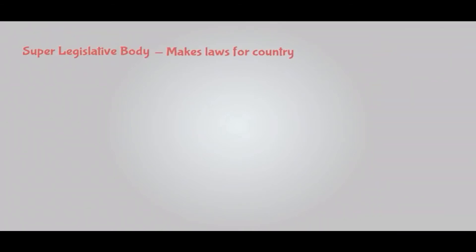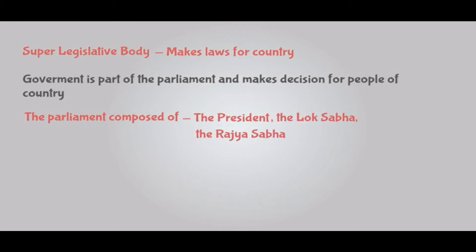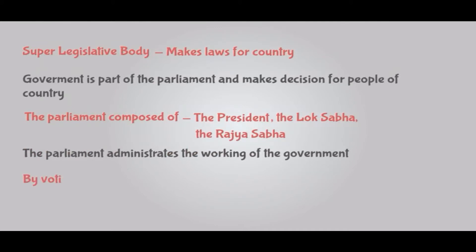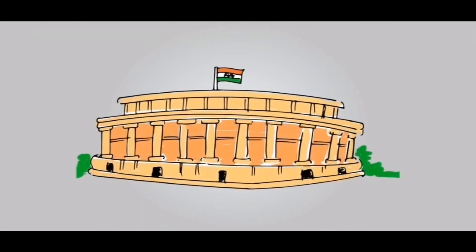So what did we learn about the Parliament? The Parliament is a super legislative body which makes laws for our country. The government is a part of the Parliament and makes decisions for the people of the country. The Parliament is composed of the President, the Lok Sabha and the Rajya Sabha. The Parliament administrates the working of the government. By voting, we elect the members of the Parliament directly or indirectly. That is why it is always important to cast our vote, because it is our vote that makes up the country's Parliament.